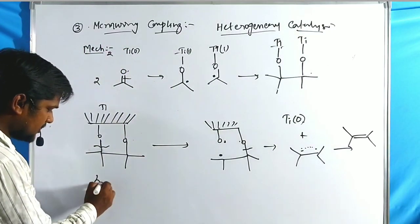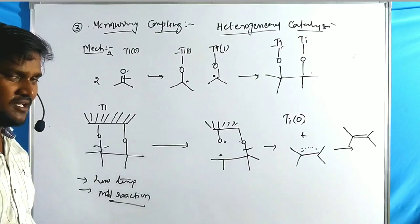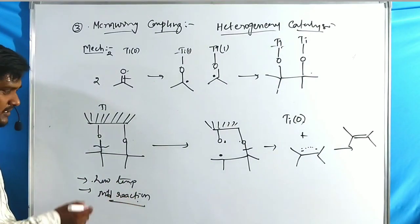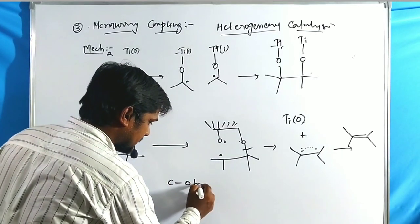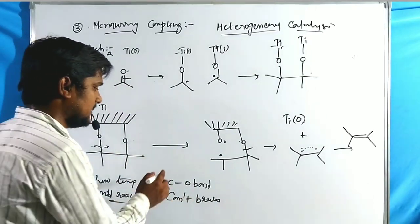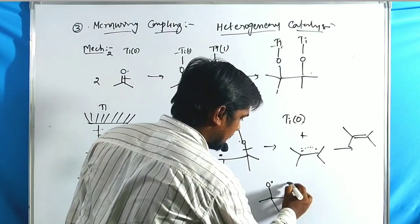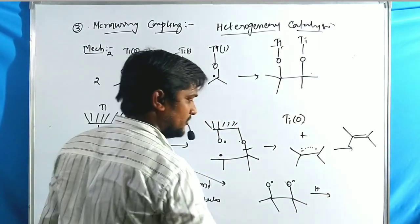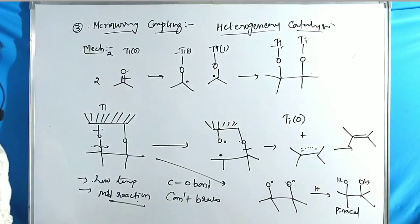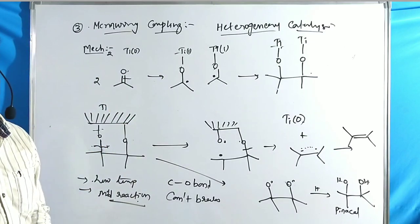When low temperature or mild reaction conditions are used, there is an exception: the C-O bond cannot break. Instead, bond homolysis takes place forming an O radical, which reacts with hydrogen to give O-H. Under low temperature with mild reducing agents, pinacols are obtained as the major product. This is the major exception in McMurray Coupling.